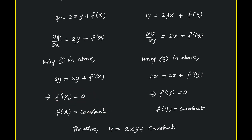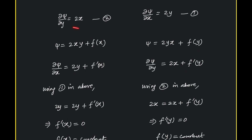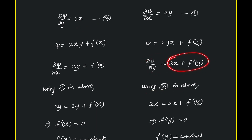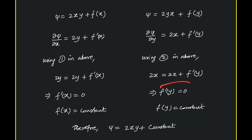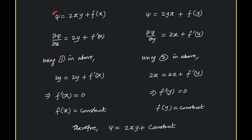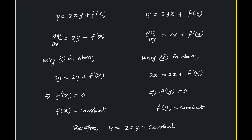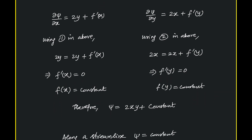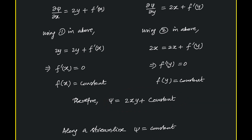Similarly, substituting into the other equation, we get 2x plus 2x, and replacing this equals 2x plus f'(y). From this, we get f'(y) equals 0, which means f(y) equals a constant. Therefore, from both conditions, f(y) and f(x) are constants, and for equality they must be the same constant. So, ψ equals 2xy plus constant.